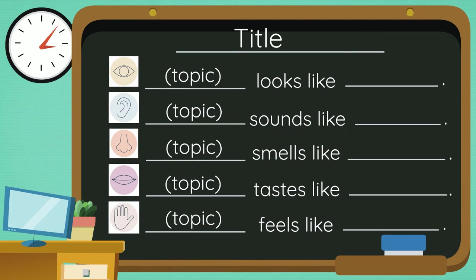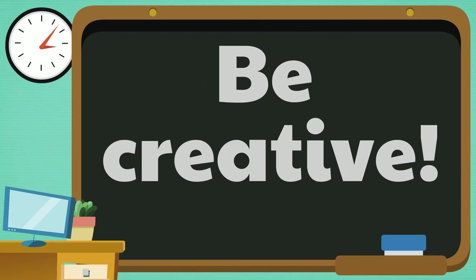Start with a title — this is the topic of your poem. Choose something you can describe using all five of your senses. Next, bring the topic to life in the body of your poem. Describe the topic using all five of your senses, writing one sentence for each sense. This is the time to be creative — you want the person reading your poem to understand and experience what you are describing.